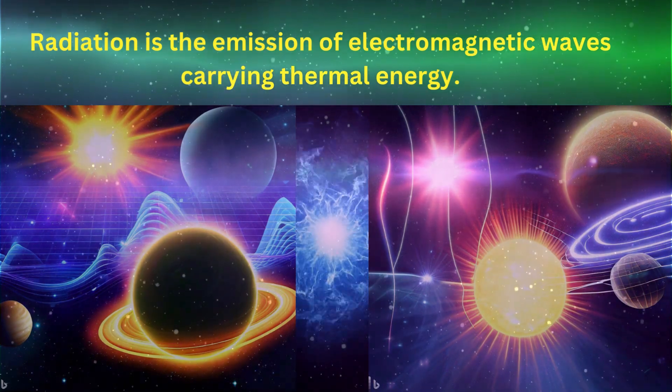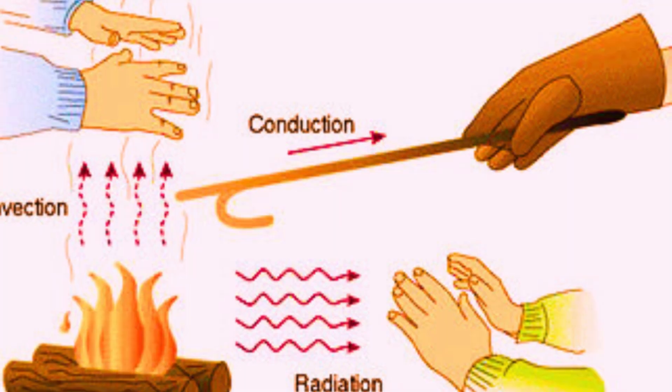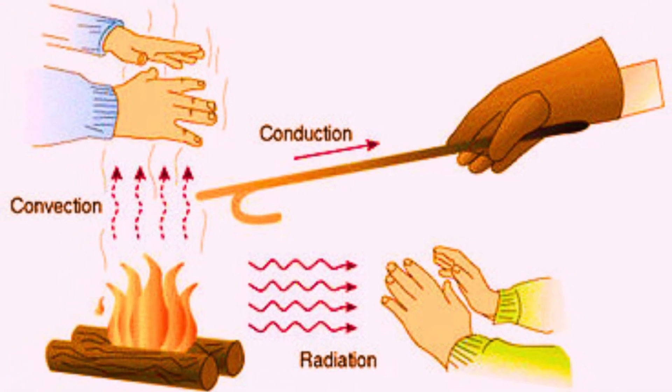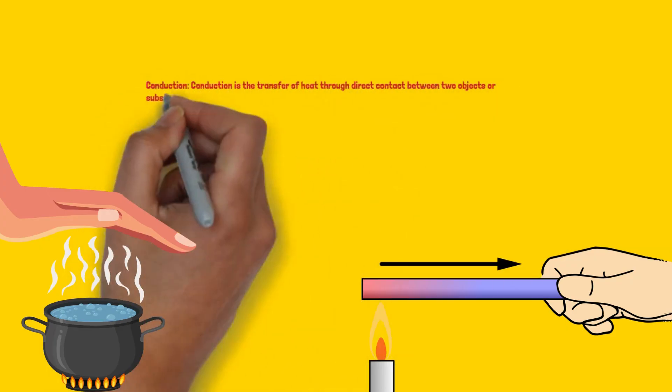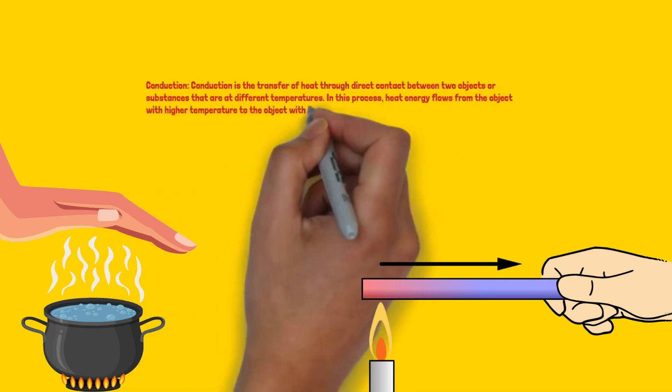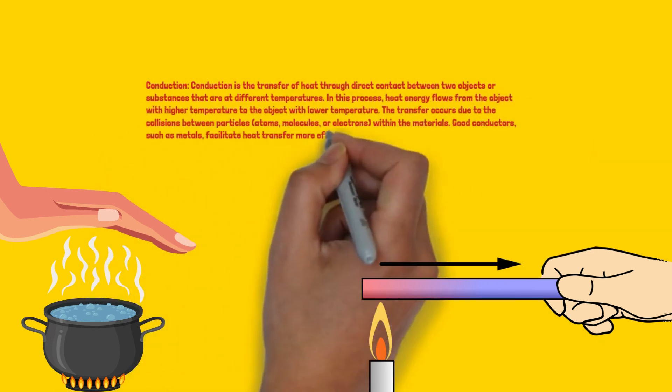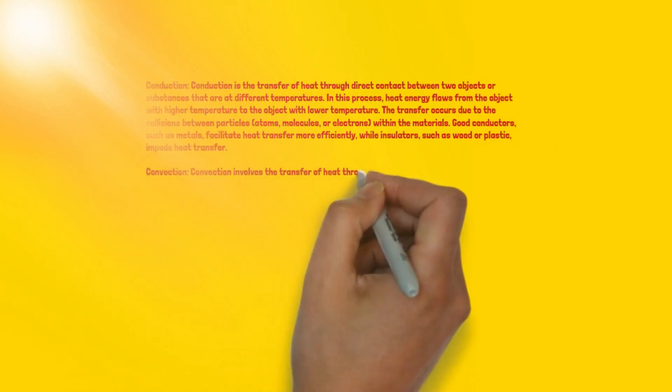The amount and wavelength of radiation depend on the object's temperature — the hotter an object, the more intense the radiation it emits. Now that we have explored each process individually, let's compare conduction, convection and radiation to see how they differ and where they commonly occur. While conduction and convection require a medium for heat transfer, radiation can occur in a vacuum. Conduction occurs primarily in solids, convection in fluids, and radiation can happen across all states of matter.